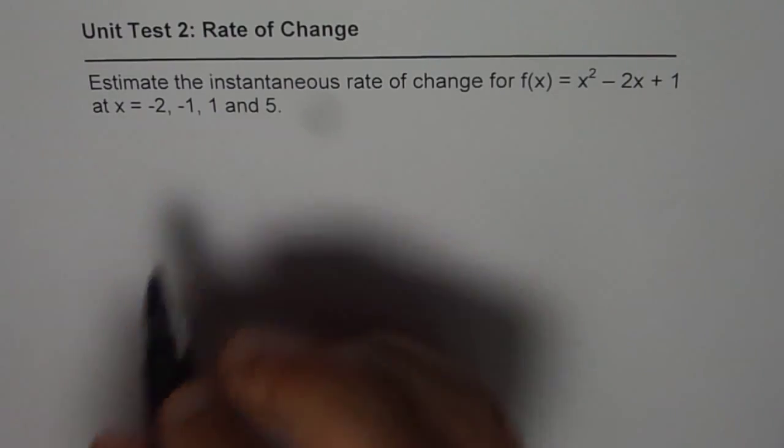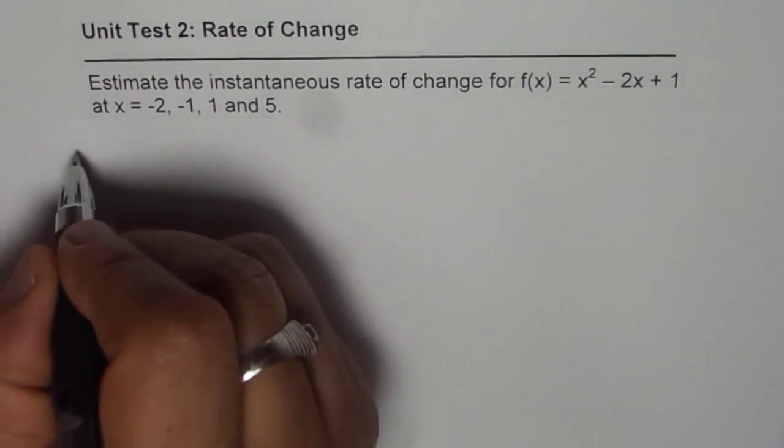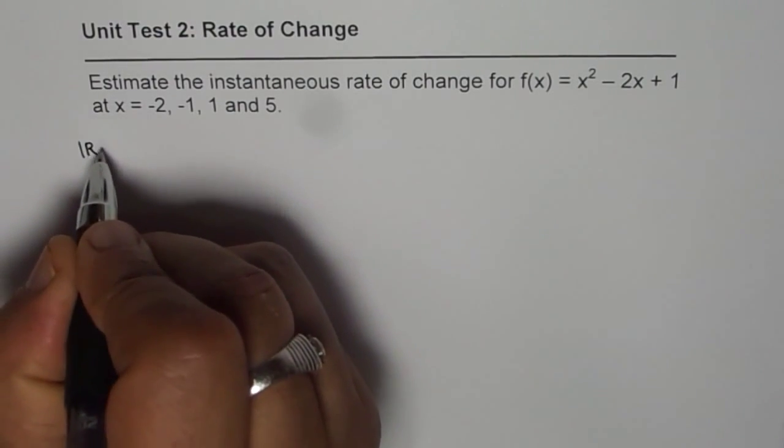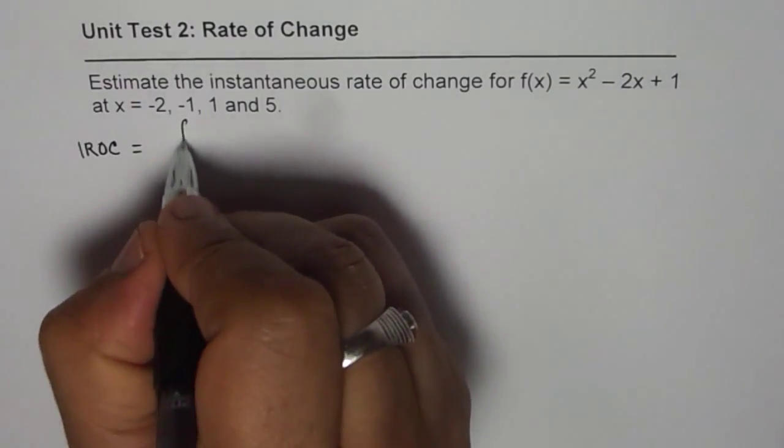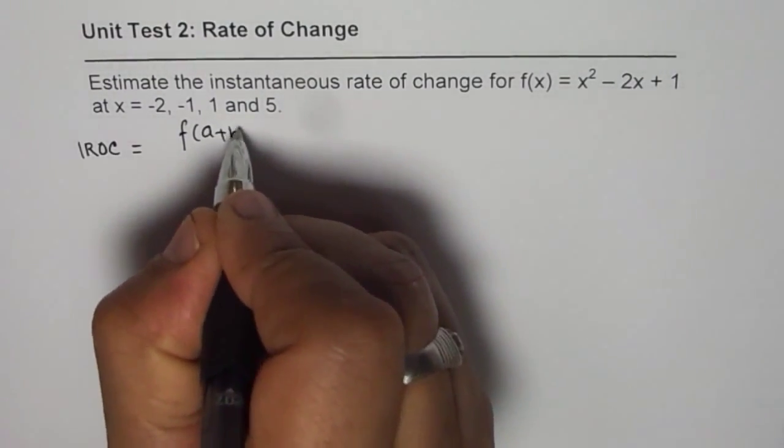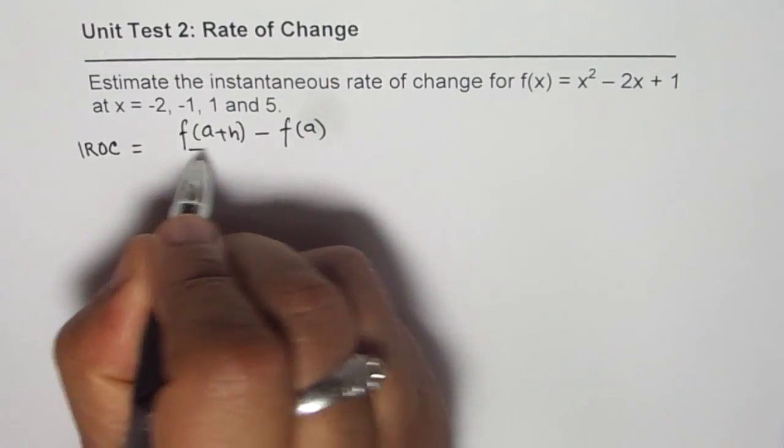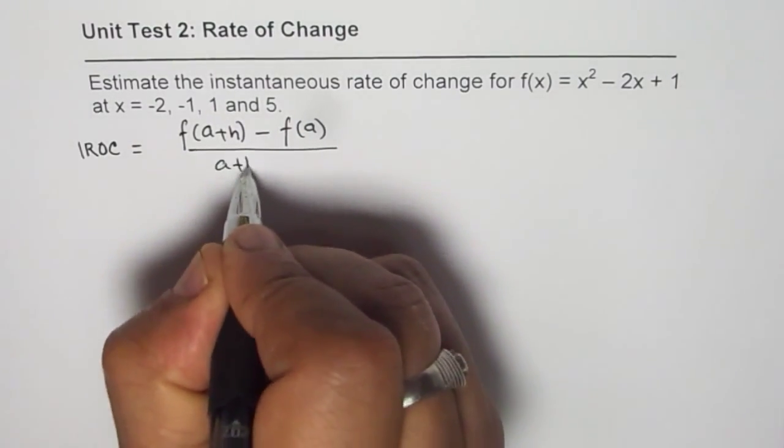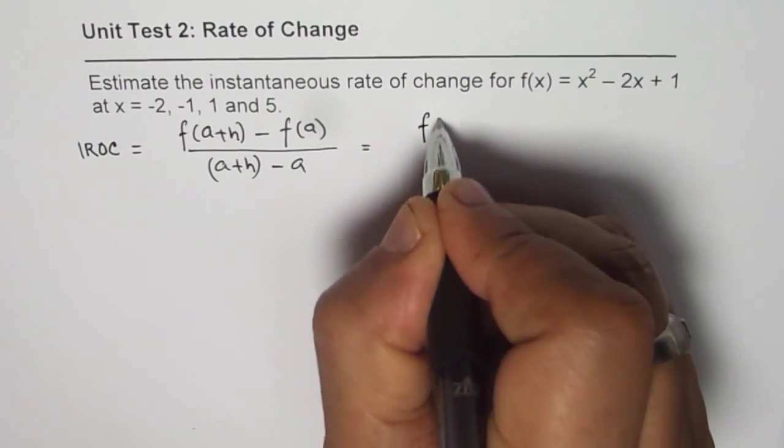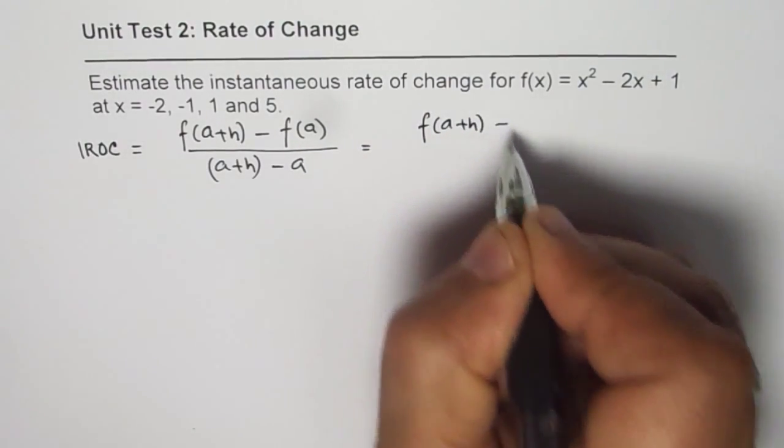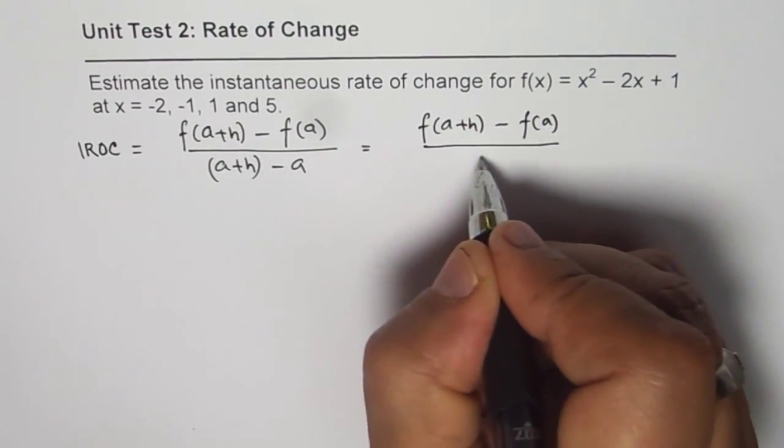As we know, instantaneous rate of change for any function is equal to f(a+h) minus f(a) over (a+h) minus a. That gives us f(a+h) minus f(a) divided by h. That's the difference quotient formula for you.